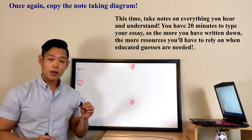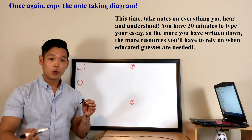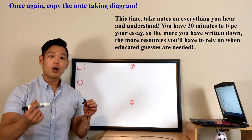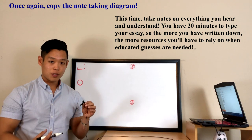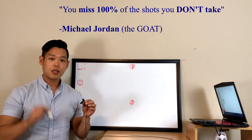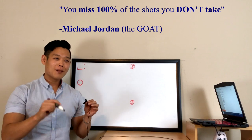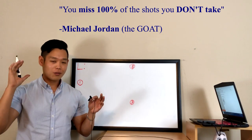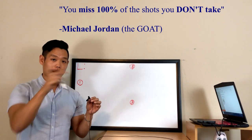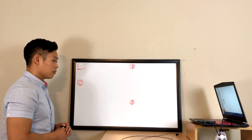Don't forget the importance of educated guesses — they allow you to receive bonus points. As Michael Jordan said, you miss 100% of the shots you don't take, so take as many shots as possible. Just make sure they're educated guesses, not wild throws. Try to make them at least reach the hoop — don't just throw air balls.